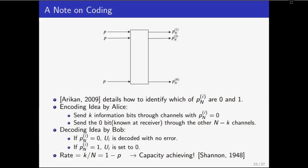This is capacity achieving as claimed by Shannon in 1948. In fact, polar codes were the first class of codes which were shown to be capacity achieving.